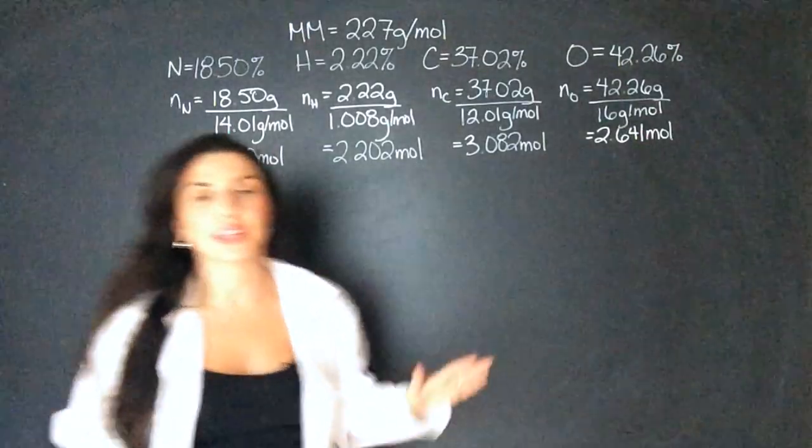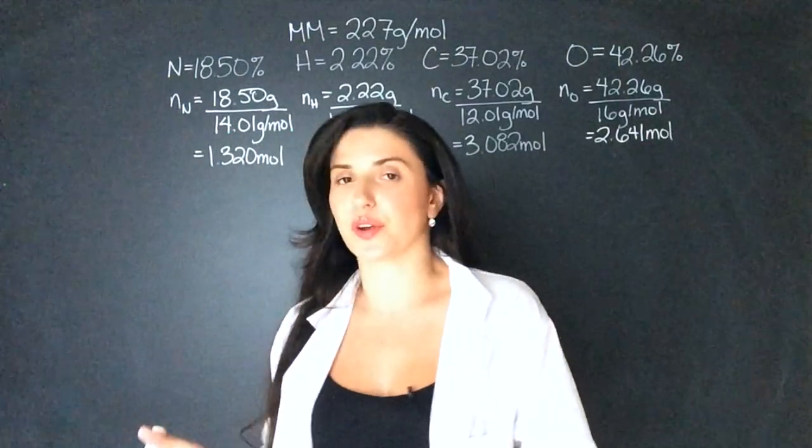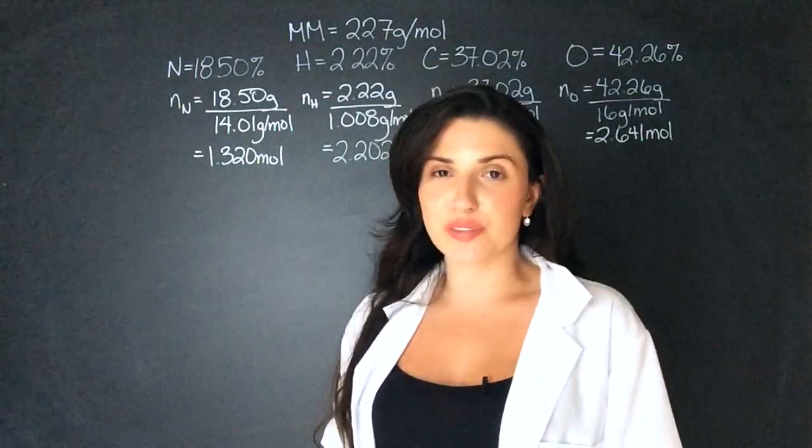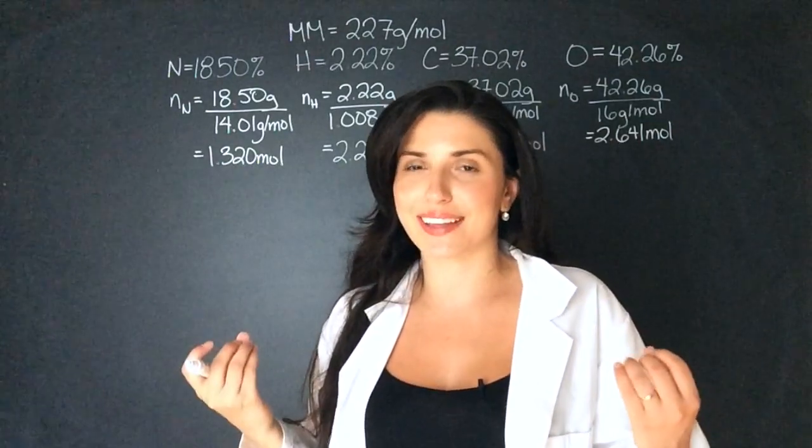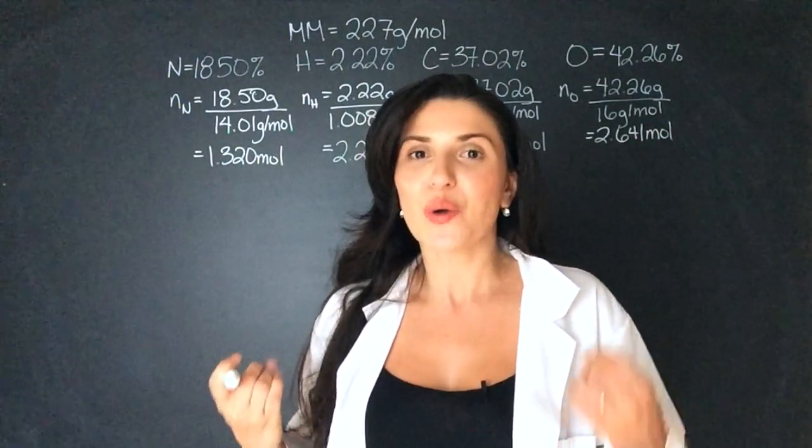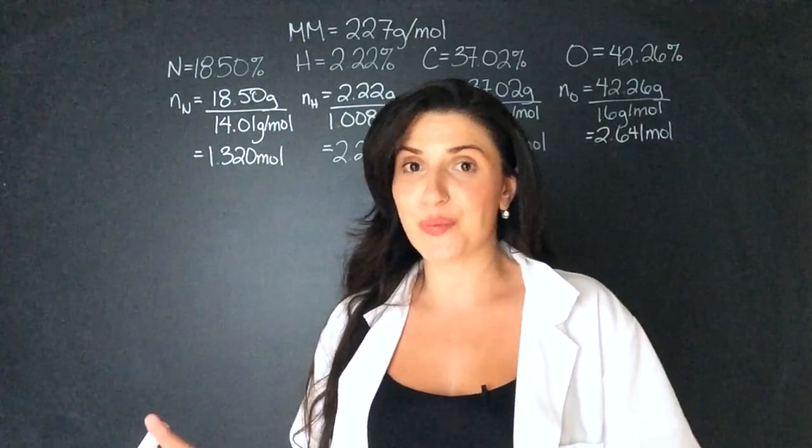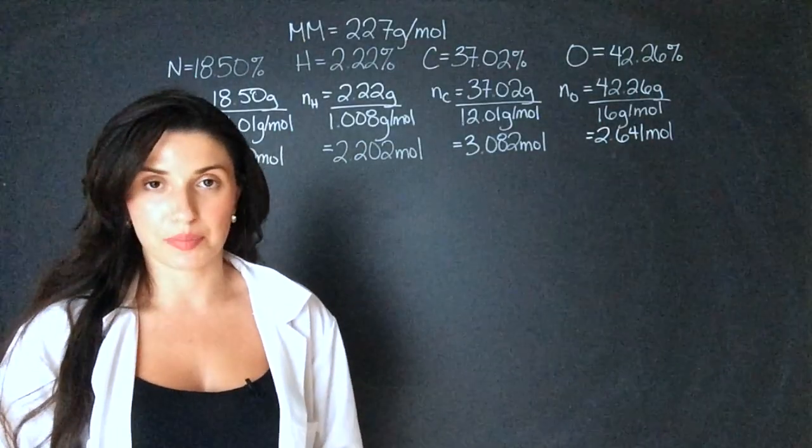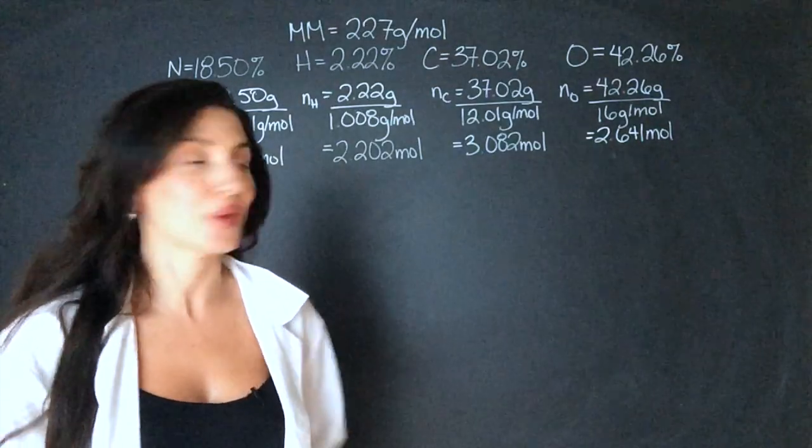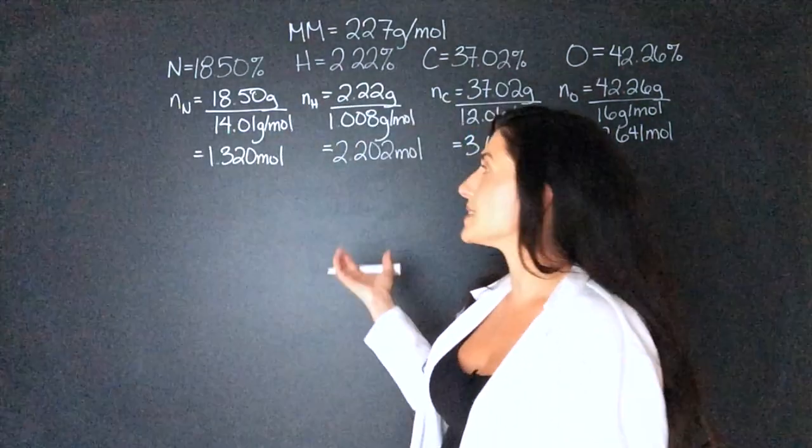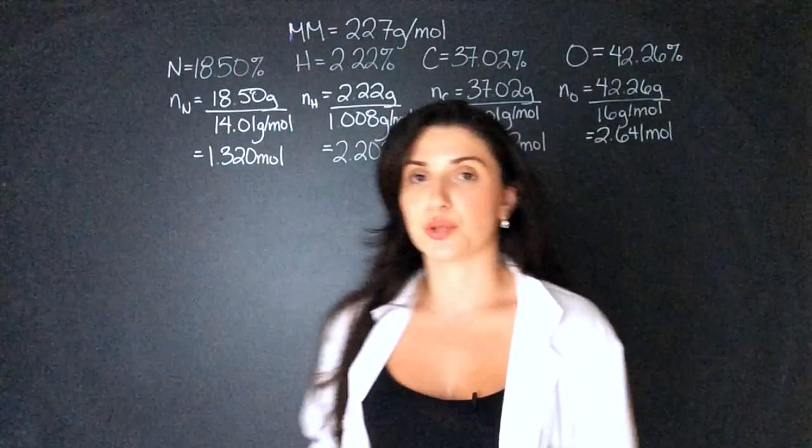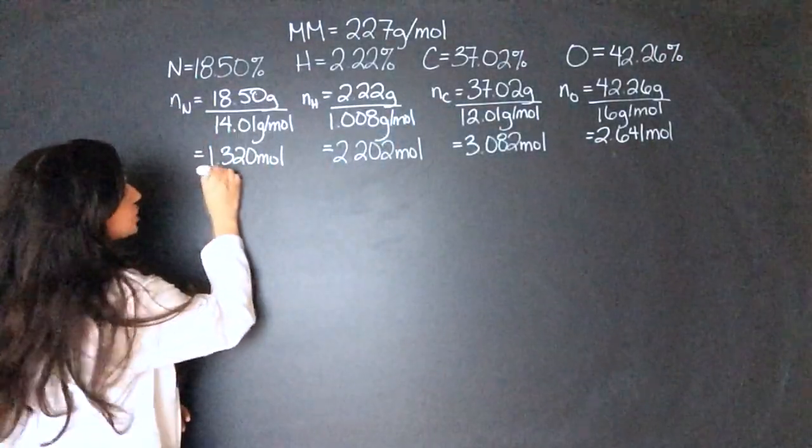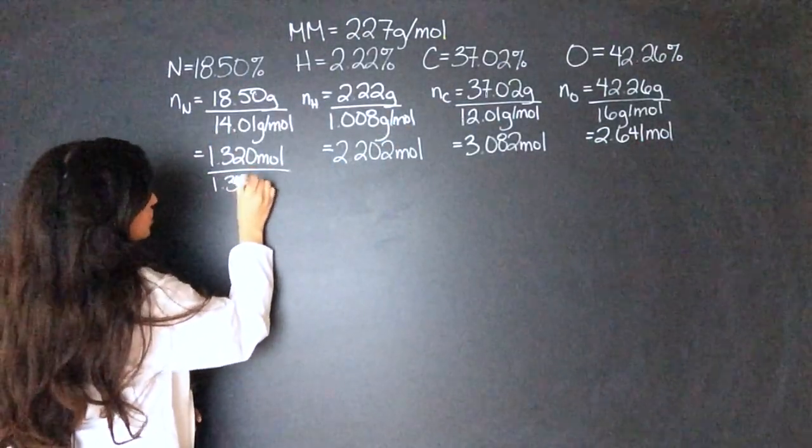Now we've calculated what the moles would be in a 100 gram sample. Remember, we're just going for the ratio. So it doesn't matter that there's not actually that many moles in the sample. We just need to find the ratio. We now need to divide all these numbers by the lowest number in order to get the ratio. So the lowest number of moles is nitrogen at 1.320. So I'm going to divide each one by 1.320.